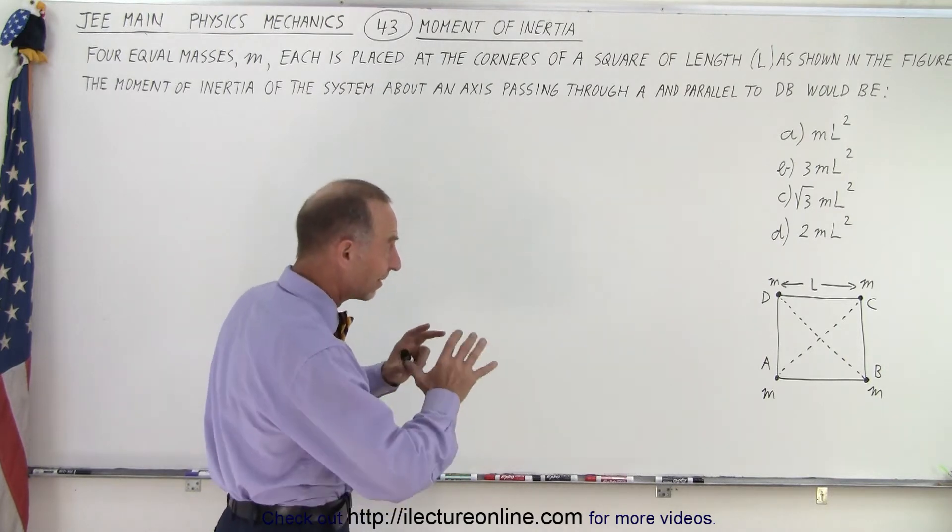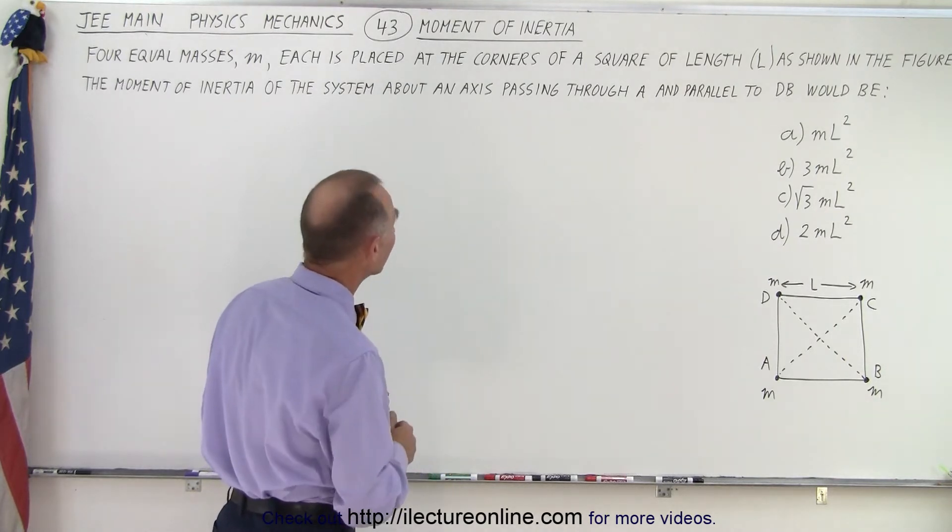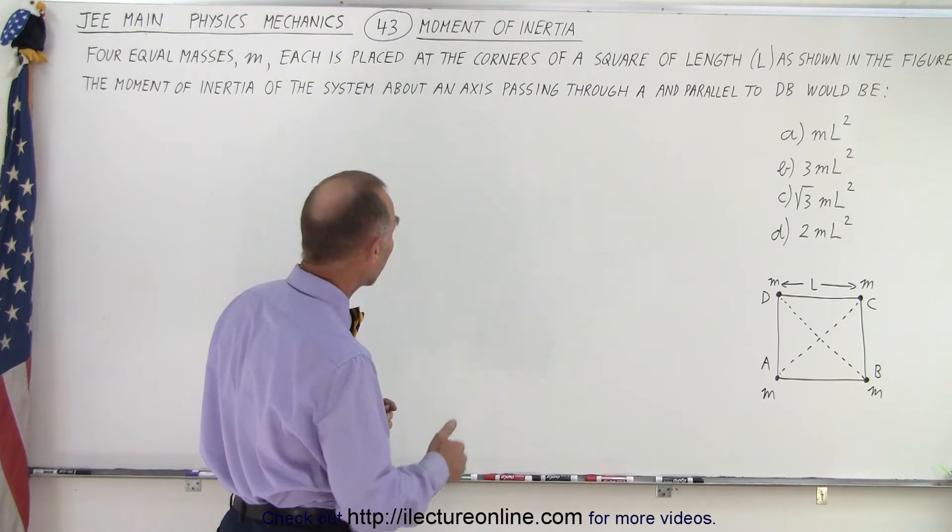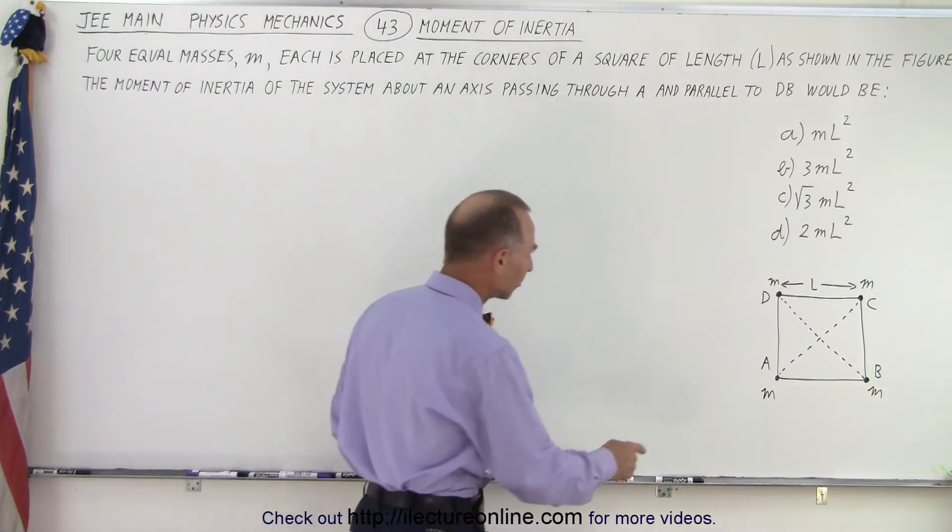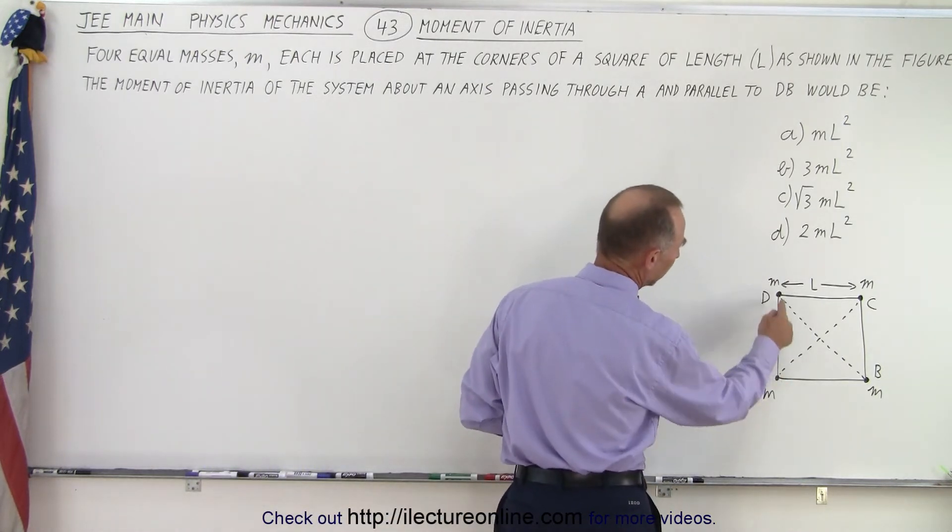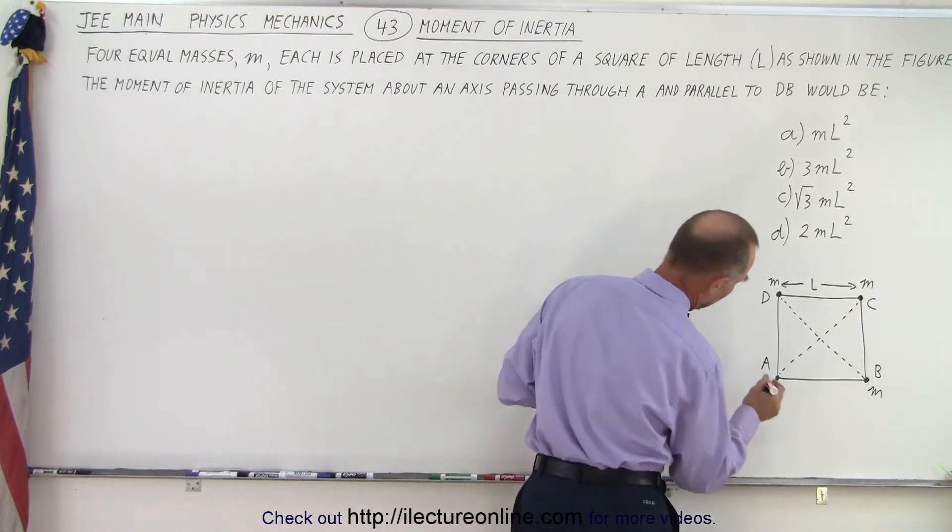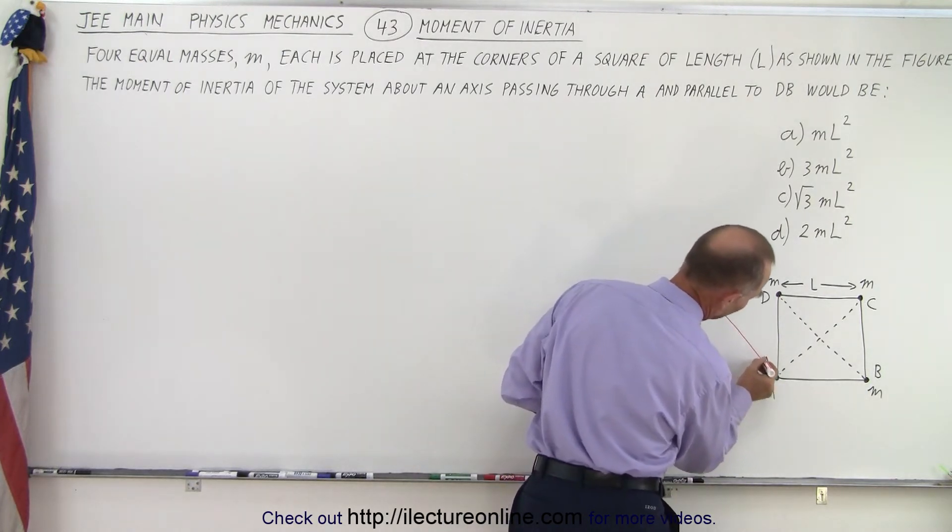Alright, so first of all let's add some additional information on the drawing. So they have an axis that passes through A which is parallel to D and B. So let's draw that. It looks like that would be this axis right here.